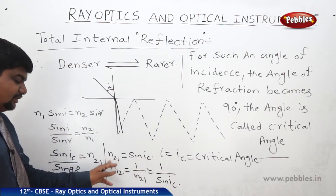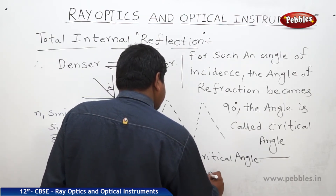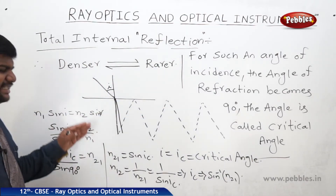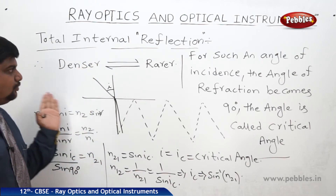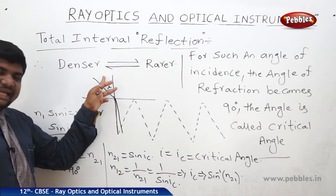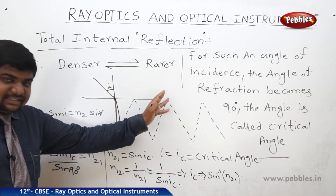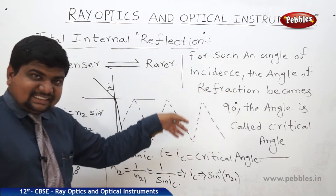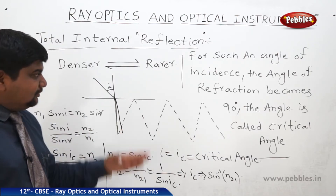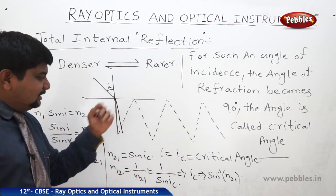From this we can write ic = sin⁻¹(N21). This is a basic introduction to total internal reflection. Now we will try to visualize how the angle changes when varying the angle of incidence from denser to rarer — what is the change in the angle of refraction, and at which angle of incidence total internal reflection takes place, along with examples from daily life.